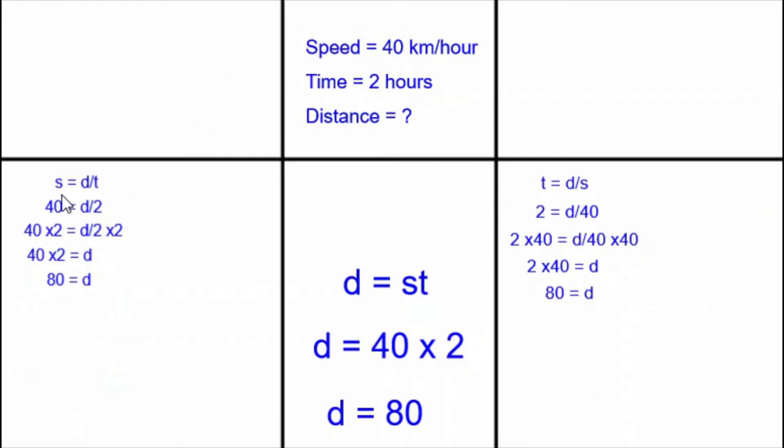So, if this one on the left would be easiest to use when speed is our unknown, let's make a problem where speed is the unknown. And here we go. If the time is 3 hours and the distance is 90 kilometers, what would be the speed? I want to use this version of the formula where speed is isolated on the left. So, that means I'm replacing the D with 90 and the T with 3.